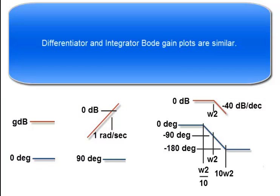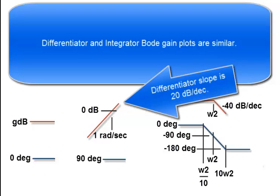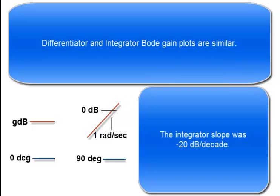Differentiator and integrator Bode plot gains are similar. The differentiator slope is plus 20 dB per decade, and the integrator slope was negative 20 dB per decade.